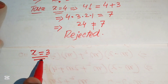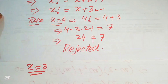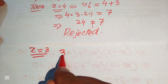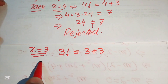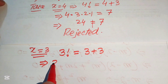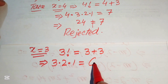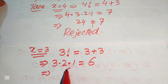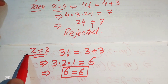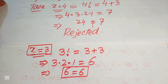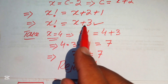Now we try x equals 3. Substituting gives 3 factorial equals 3 plus 3. Expanding: 3 times 2 times 1 equals 6, and 3 plus 3 equals 6. So 6 equals 6, which is true. Therefore x equals 3 satisfies the equation.